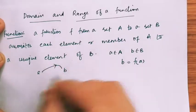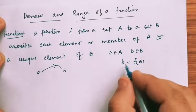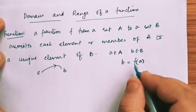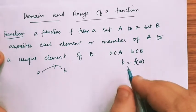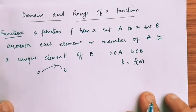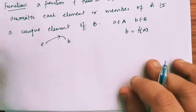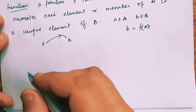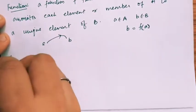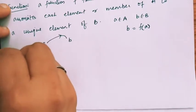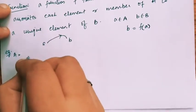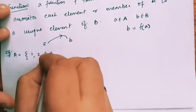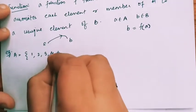So b is called the image of a. Now we will do an arrow diagram. For example, A is the set {1, 2, 3, 4, 5}.